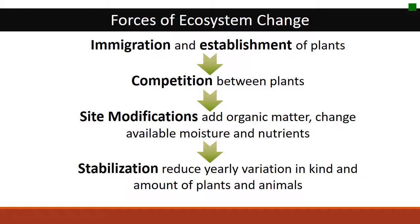This leads to some ideas about the forces of change in nature. It starts with immigration — plants and animals moving into the site and becoming established. Then there's competition, especially between plants, where the plant most well suited for the site wins. Then there's site modification: added organic matter changes the moisture and nutrients in the soil, and the plants that exist continue to compete. This ring of competition and site modification continues until, over many years, the plants most well suited to the climate and soil become stable and dominate the site. Then we see some stability — the final stages of succession.